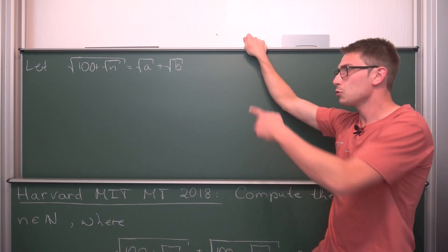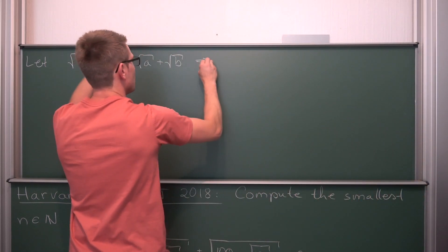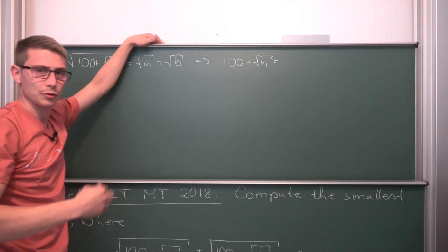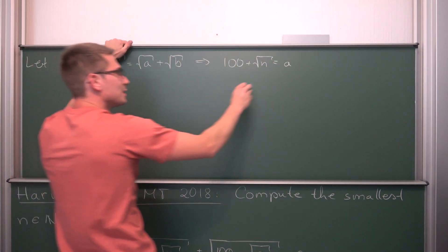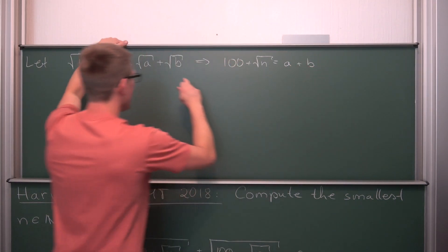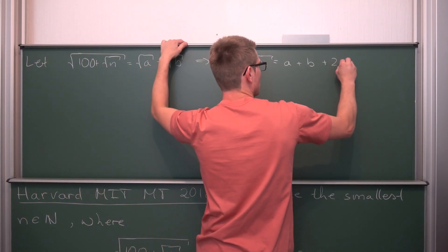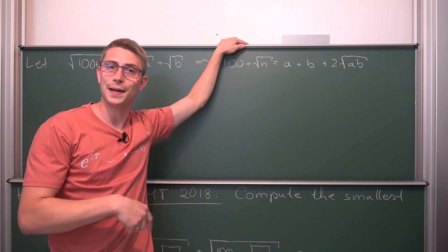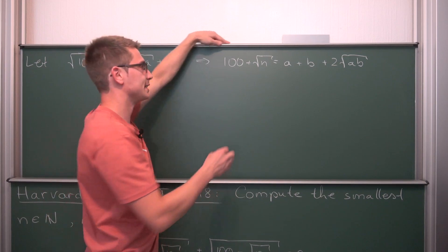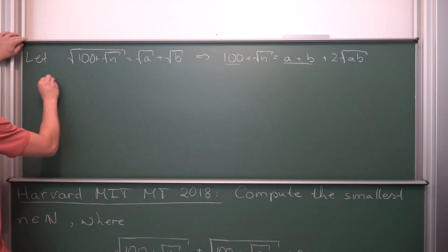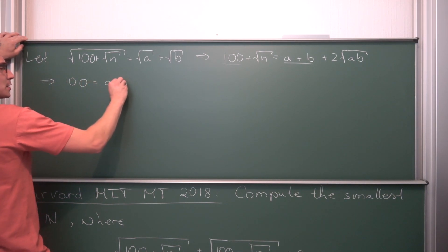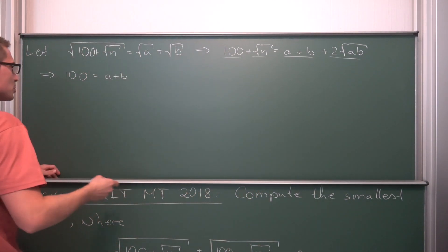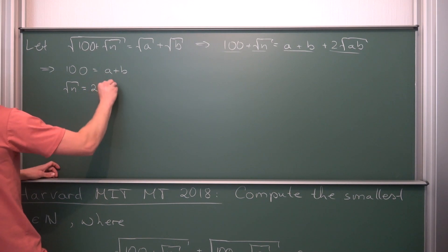With this ansatz we square both sides again, getting rid of the square roots. We get 100 + √n = a + b + 2√(ab). Now the cool thing is we can compare the rational and irrational parts. The rational parts give us 100 = a + b. The irrational part gives us √n = 2√(ab), so √n = 2√(ab).